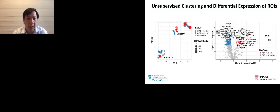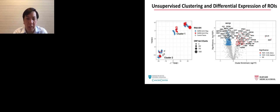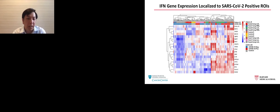On supervised clustering of these regions of interest across all patients, we saw a very clear clustering of two different clusters. The SARS-CoV-2 positive cluster one was enriched on one side, while the negative controls from SARS-CoV-2 negative autopsies as well as negative ROIs were enriched in cluster two. Doing differential expression between cluster one and two, we see multiple genes in the volcano plot. CCL15 and SSX1 were significantly higher in our SARS-CoV-2 high specimens. Interferon gene expression was highly enriched in our high virus cluster one. Supervised clustering using the interferon genes shows very clearly that the SARS-CoV-2 RNA-ISH positive areas overlay where the interferon response is.